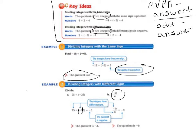And then we have negative 54 divided by 6. 54 divided by 6 is 9. We have one negative sign. So, our quotient is negative. So, here are our answers down here at the bottom.